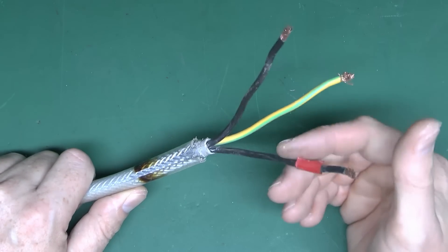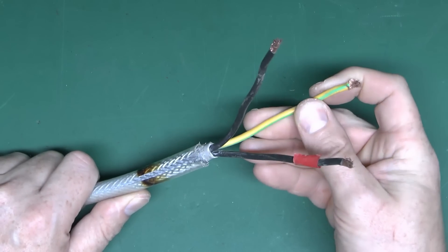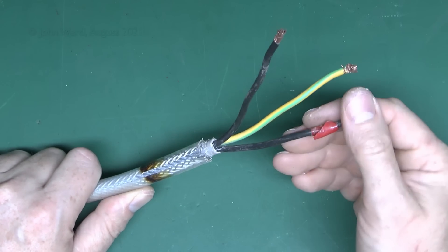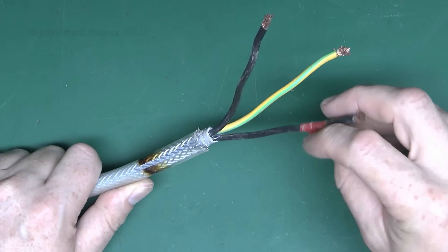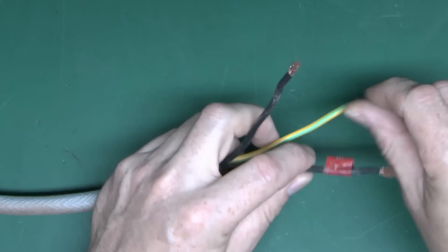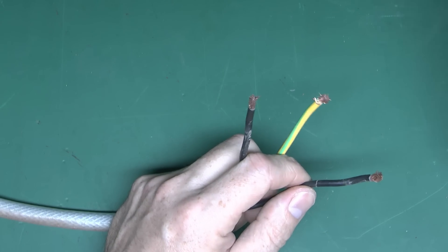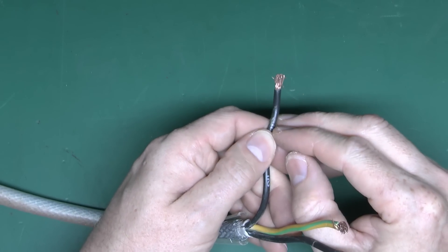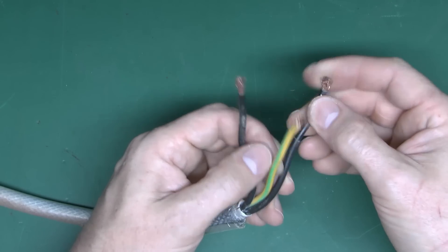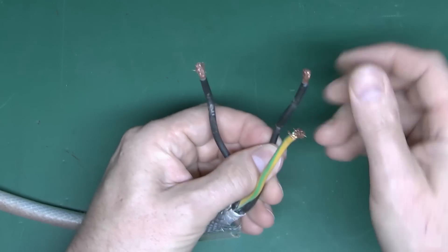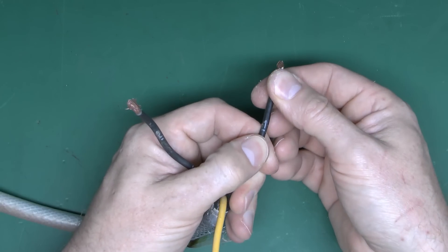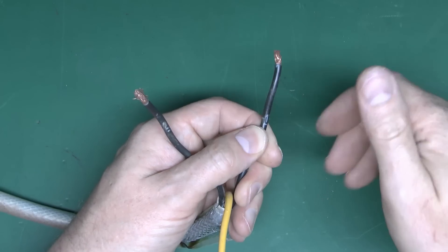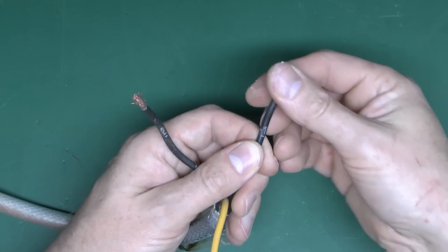Now this happens to be a 3 core cable, or 2 core plus the protective conductor. Protective conductor green and yellow as you'd expect. The other two are black. This one has got a bit of red tape here where someone has identified the line or live. The proper identification is actually these numbers. You can see on this one just about number 2 printed there, and this one should have a number 1 on it. Notice that they're underlined, so then you can check which way up they are.